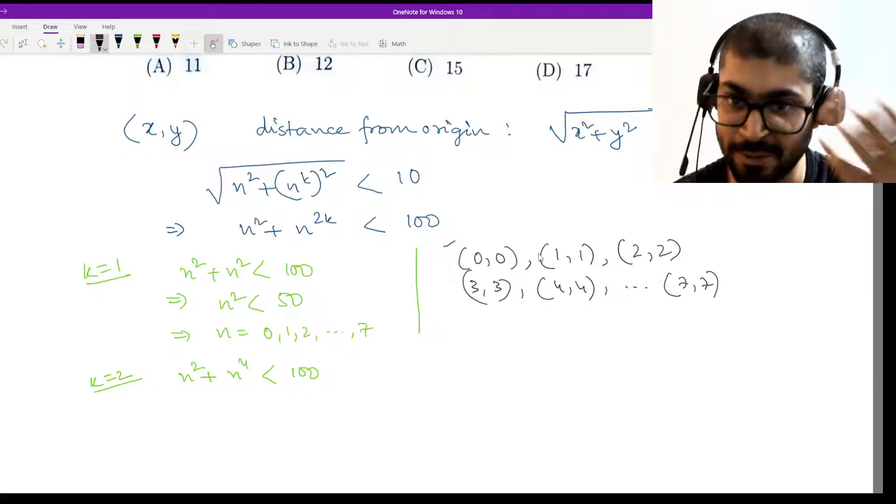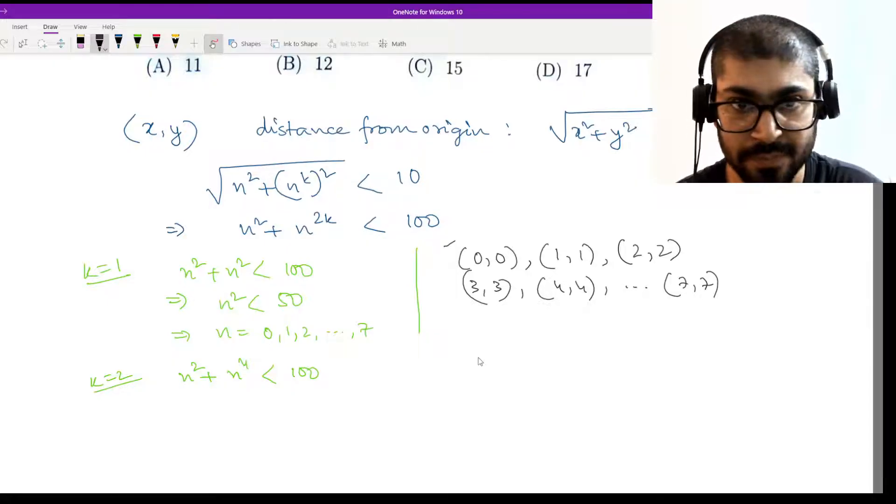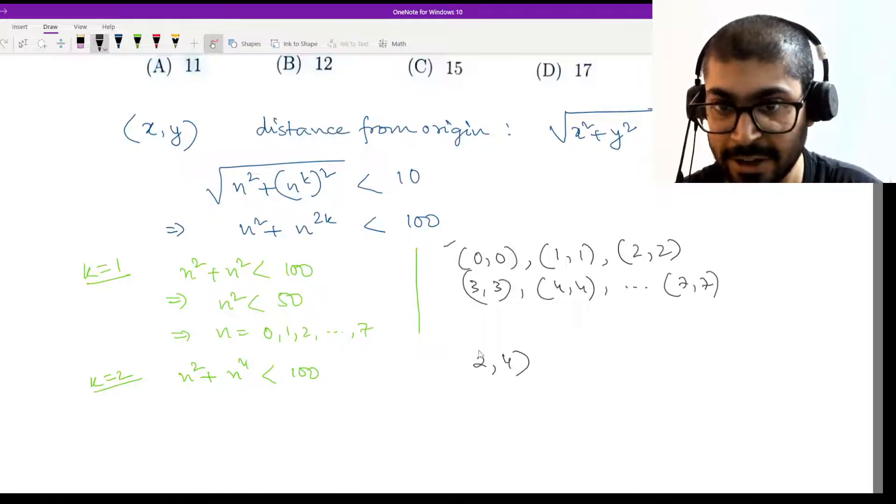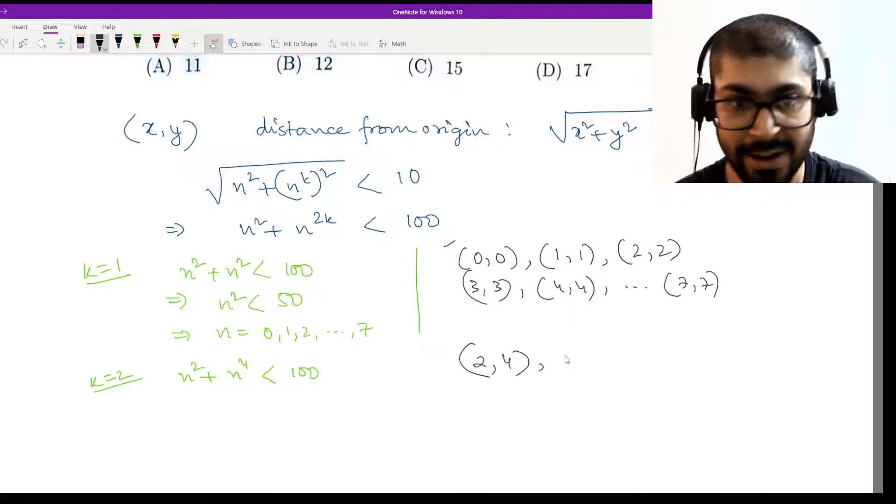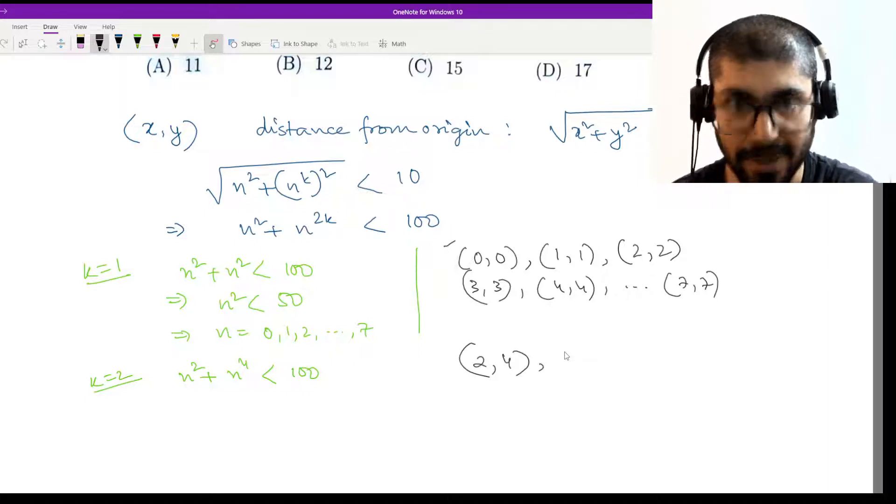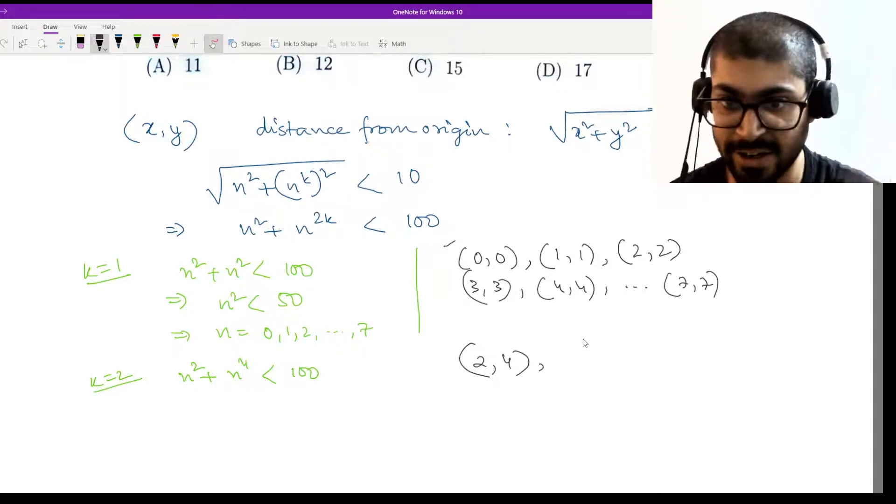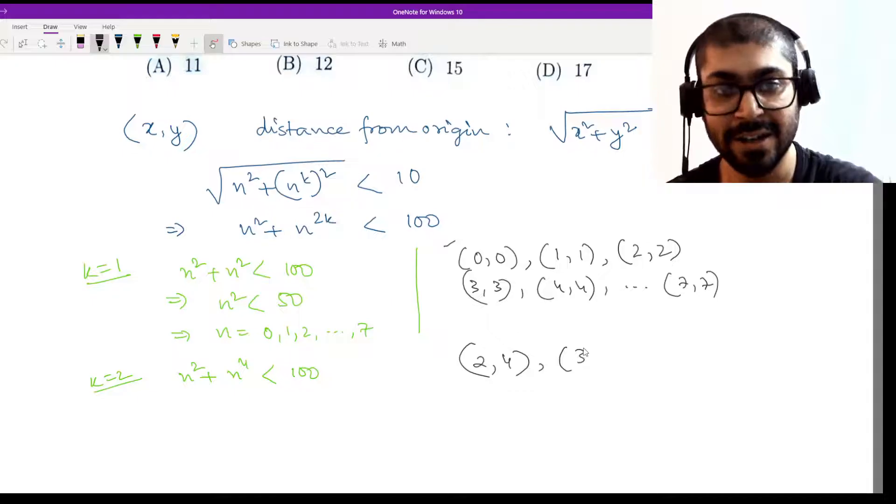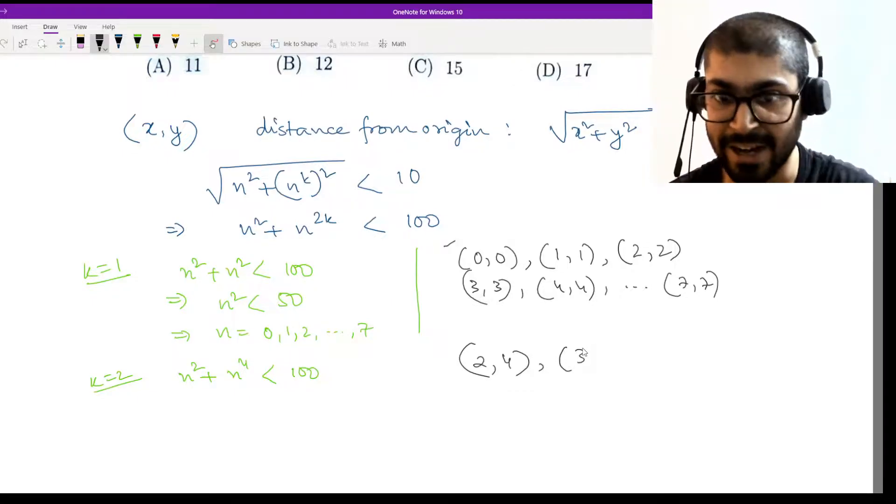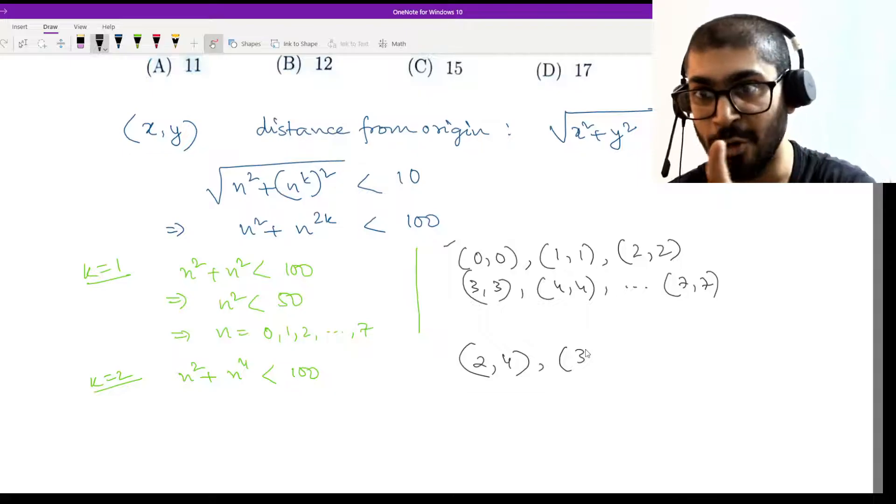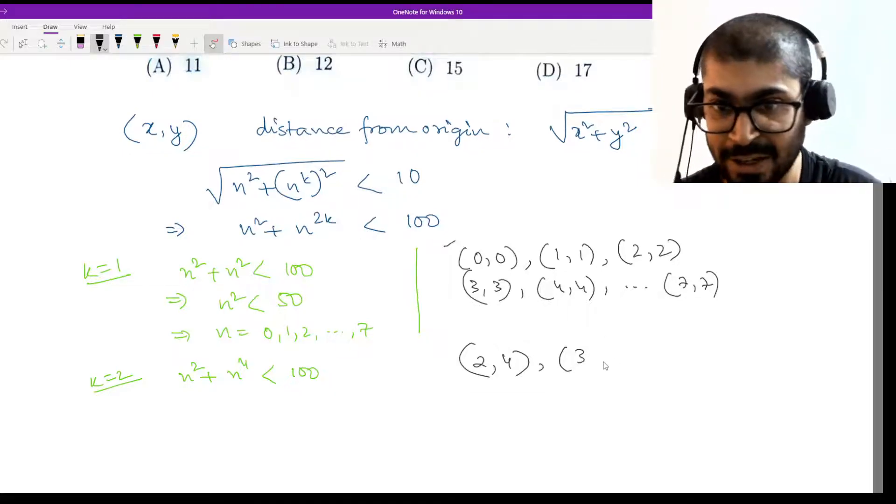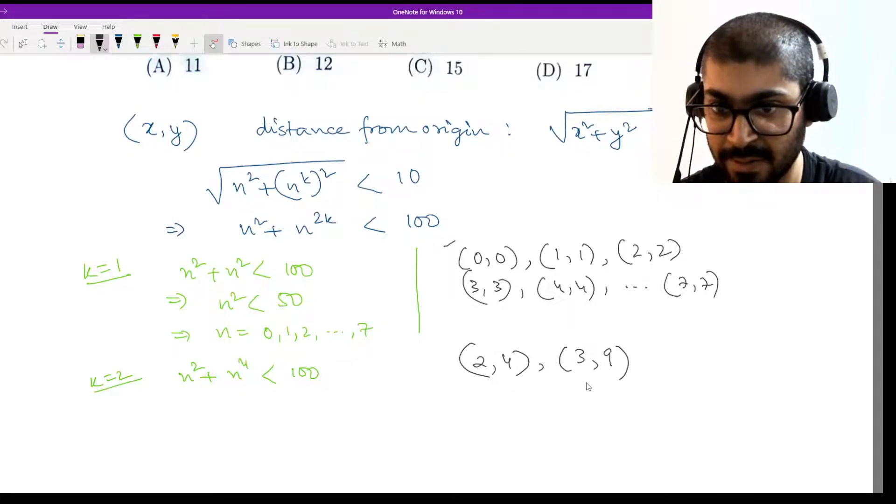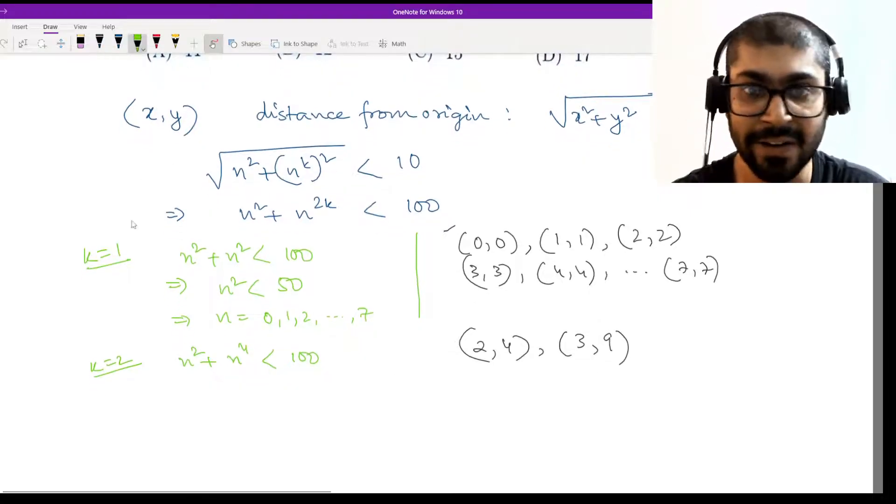Same with (1,1), it will also be there. What happens at 2? If n is equal to 2, then n to the power k will be 4, so this is a new point (2,4). 2² + 2^4, so 4 + 16 = 20 less than 100. Let us try with 3: 3² is 9 plus 3^4 is 81, 9 + 81 is 90, less than 100. After 4 it will exceed, 4^4 is 256. I will have one point from here, that is (3,9).